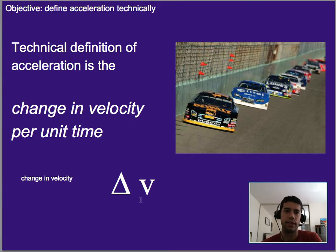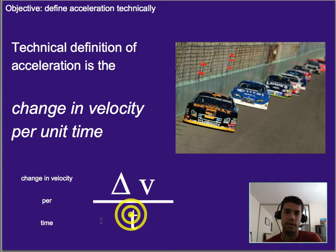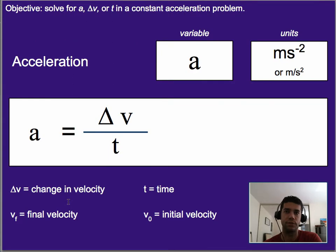To represent that as an equation, we've got change in velocity represented by this delta v here. Per is represented by the fraction bar, and time is represented by t down here. So that gives us the equation.